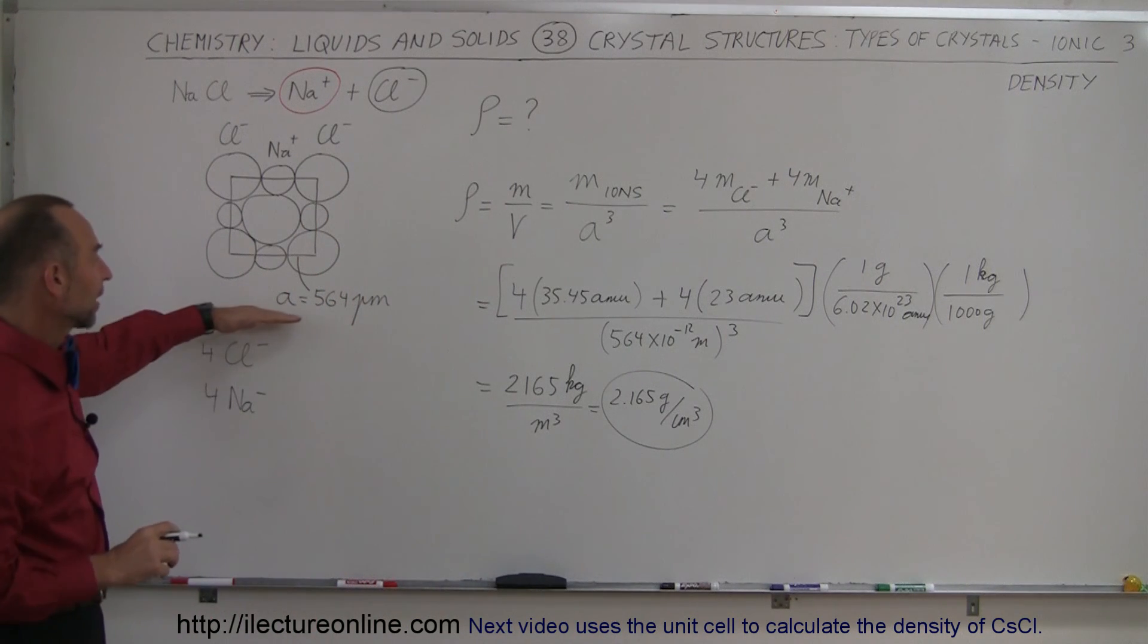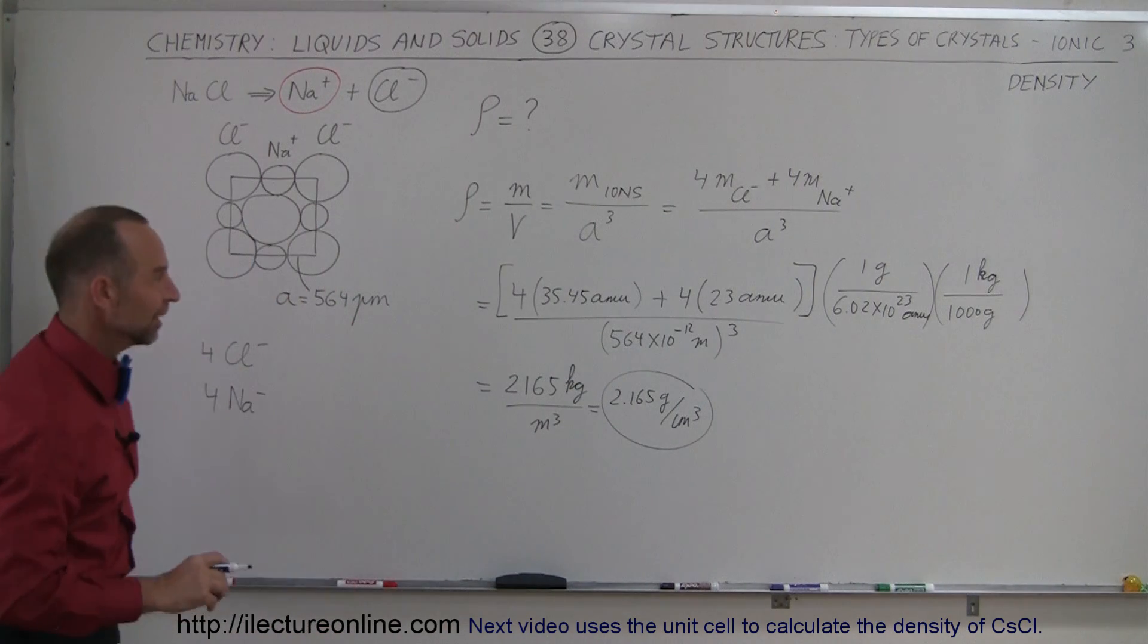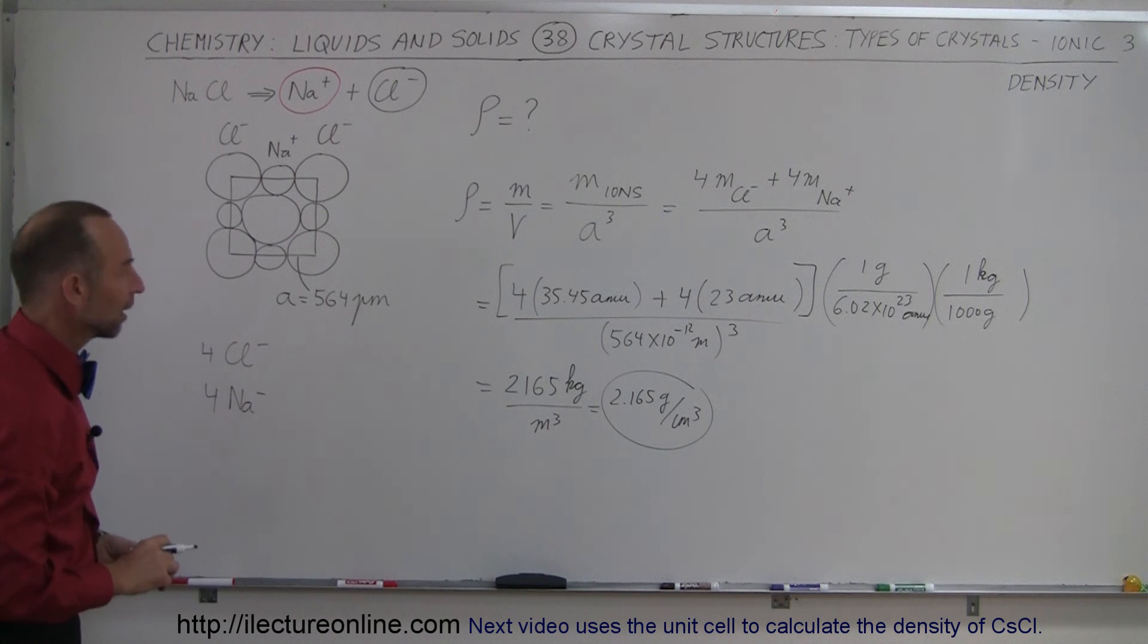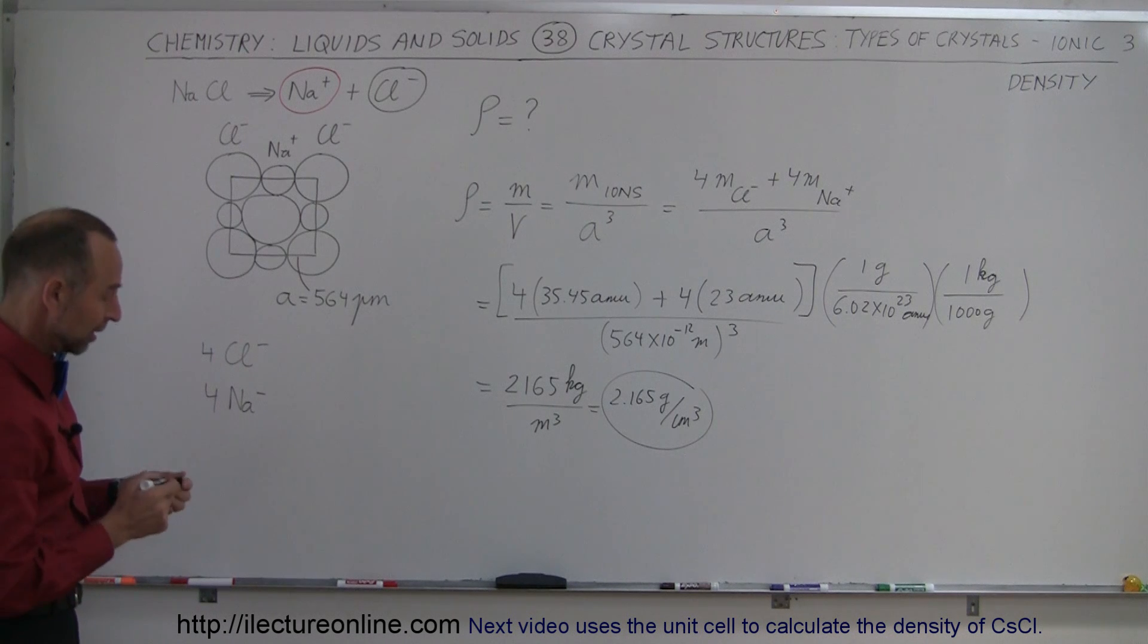So knowing the exact size of the unit cell, and of course knowing exactly how many of each ions are in that unit cell, four of each, chlorine and sodium, we can figure out the exact density of that particular structure.